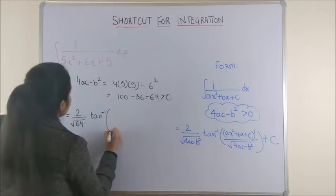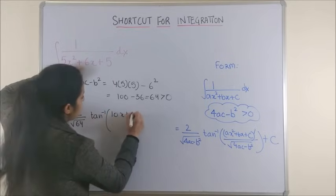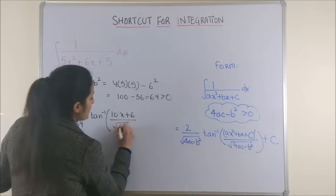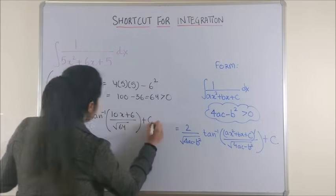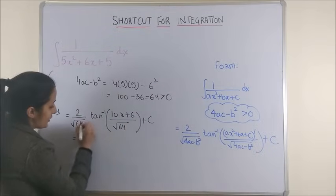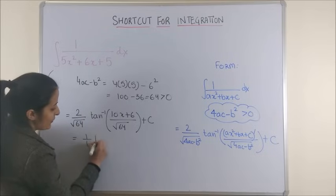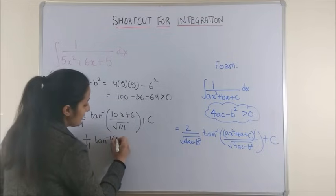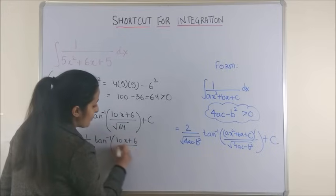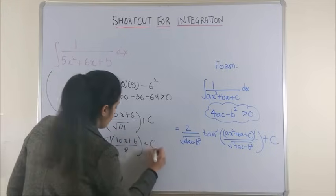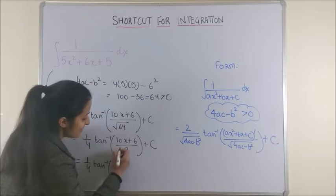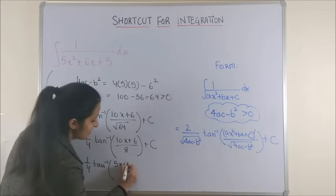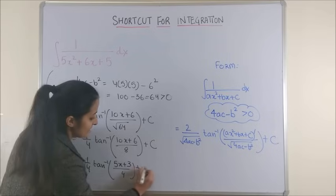The final answer is 2 upon square root of this 64 into tan inverse of derivative, which is 10x plus 6 upon square root of 64 plus c. So this is 2 by 8, that is 1 by 4, into tan inverse of 10x plus 6 upon 8, which on simplifying becomes 5x plus 3 by 4 plus c.